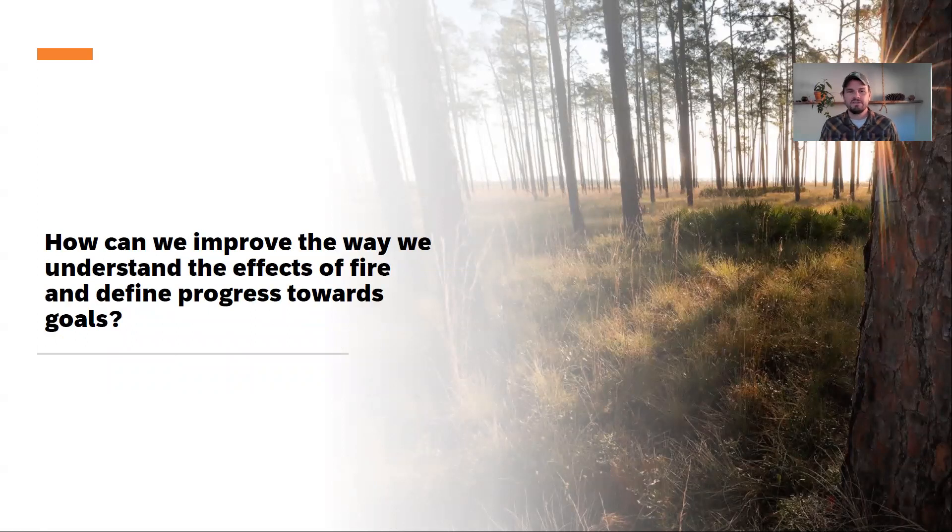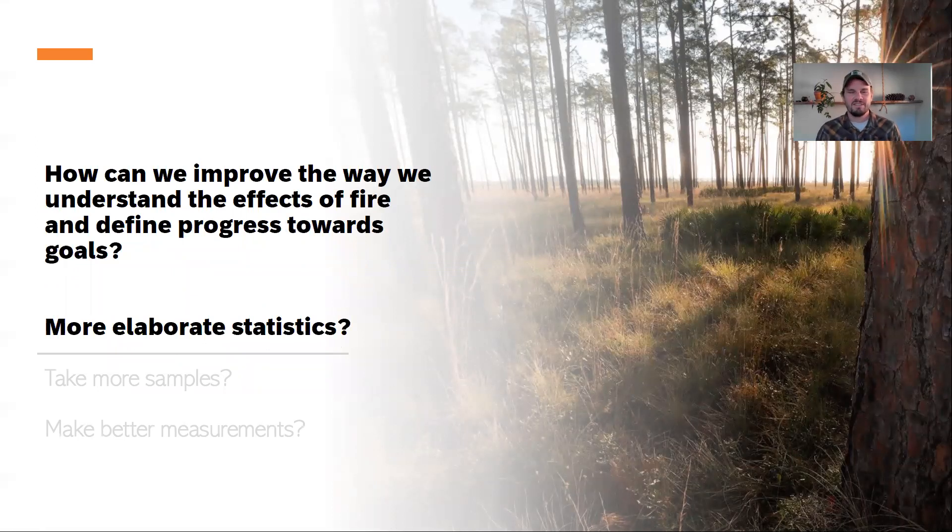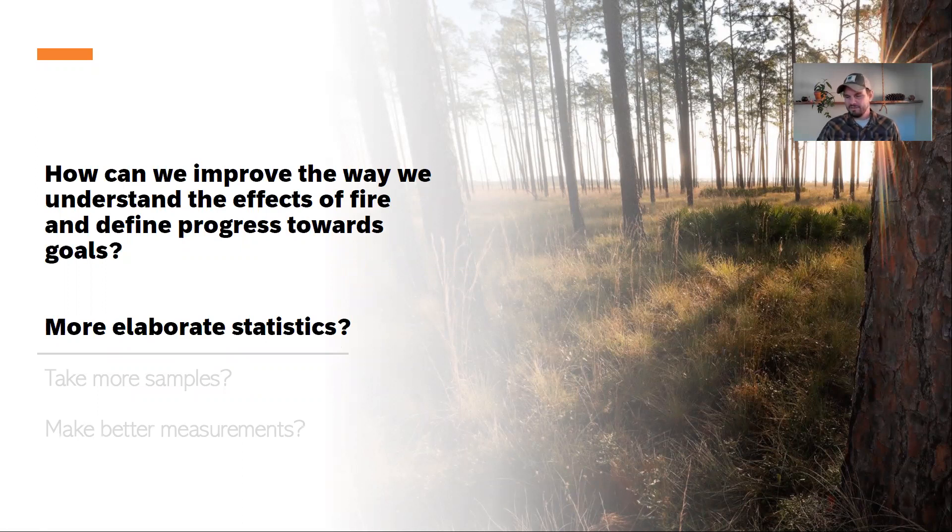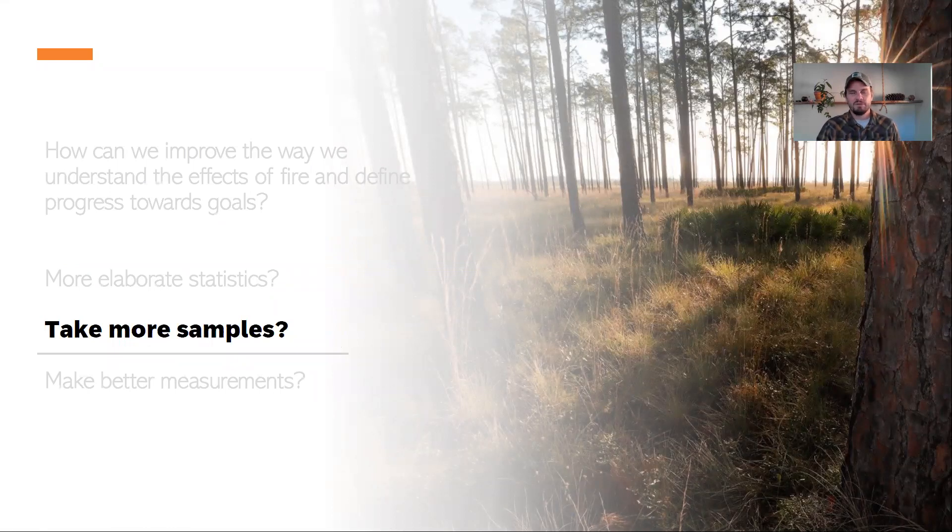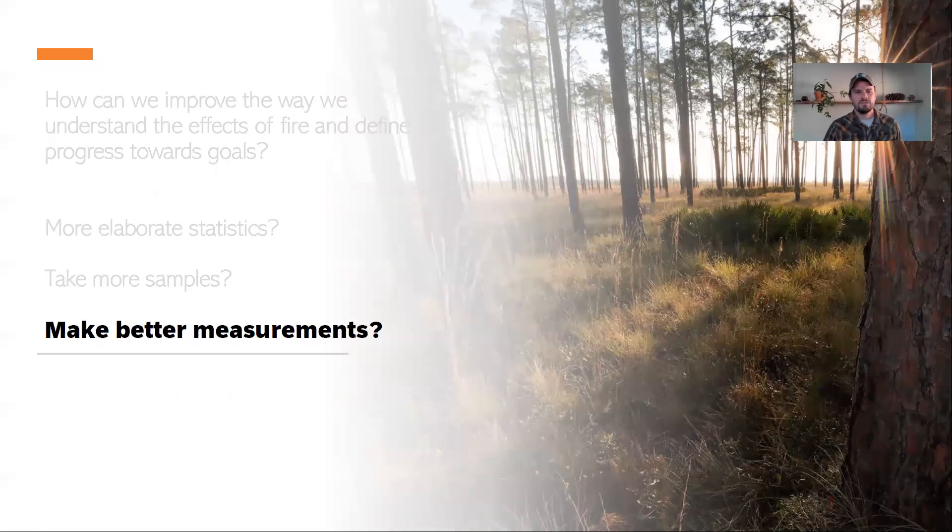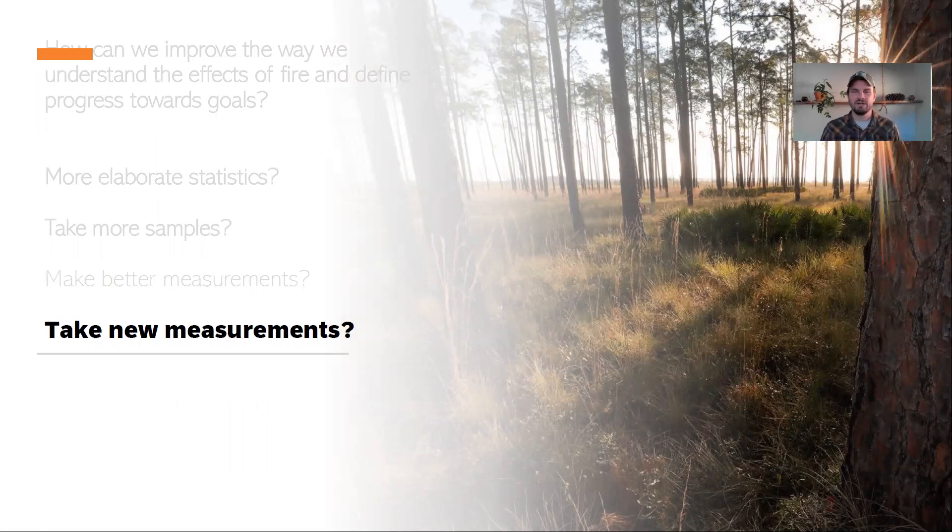So how can we improve the way we understand the effects of fire and define progress towards these goals? We can do more elaborate statistics, but we've made a lot of efforts there. Certainly taking more samples is always better, but we know that we're limited there also—the allotted time and resources to get out in the field and take those samples, or the days that those samples are available, are always limited. So maybe we could take better measurements. We could do a better job of taking them, develop new systems to do that, or maybe we could take new measurements—measurements that we haven't conceived of yet that could help guide management or help us understand biodiversity in a way that we haven't in the past.